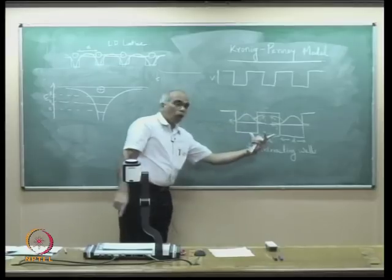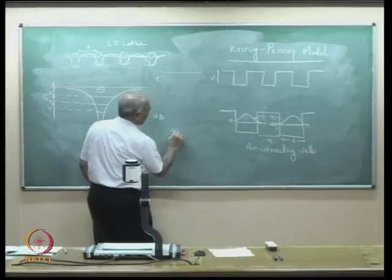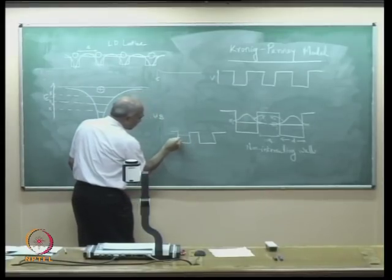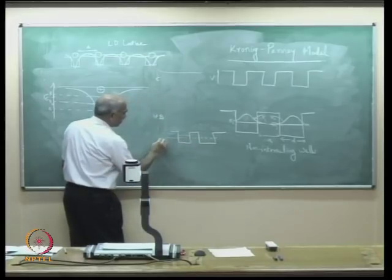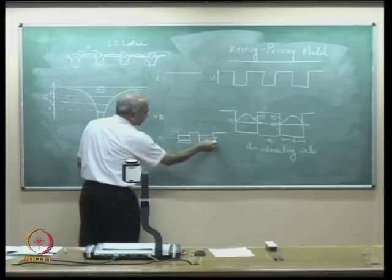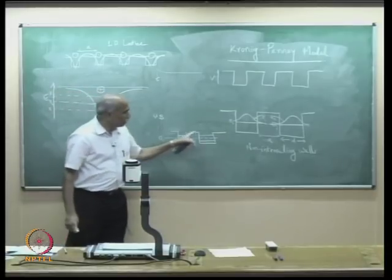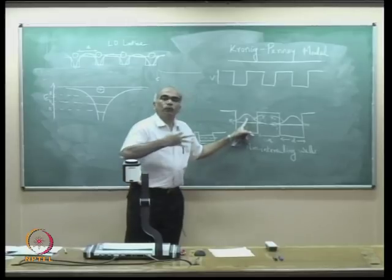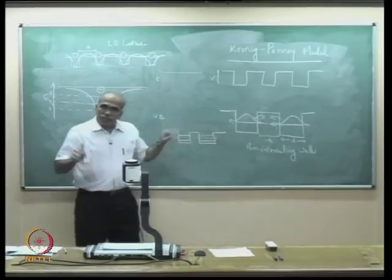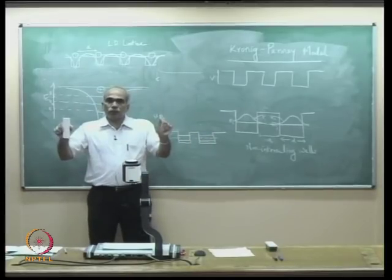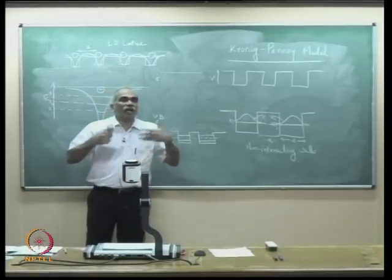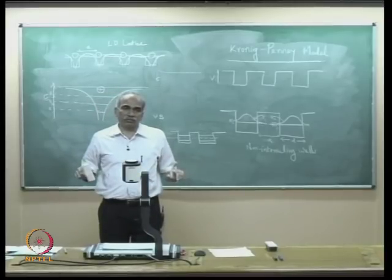When they start interacting and you solve the double-well problem, you get two solutions: one slightly above and one slightly below the original E₁. There are now two allowed energy values. If there are three interacting wells, there will be three solutions; for N interacting wells, there will be N allowed states.